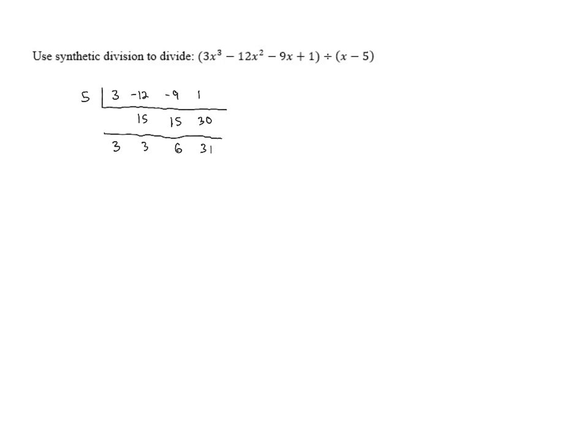And so our answer is going to be 3x² + 3x + 6, and then the remainder 31 goes over x - 5. This is our final answer.